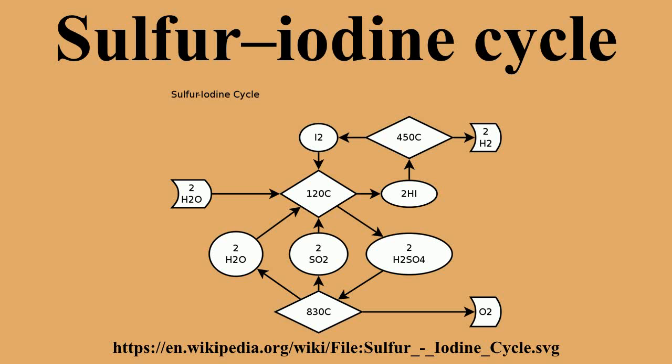Hydrogen Economy. The sulfur-iodine cycle has been proposed as a way to supply hydrogen for a hydrogen-based economy. It does not require hydrocarbons like current methods of steam reforming, but requires heat from combustion, nuclear reactions, or solar heat concentrators.